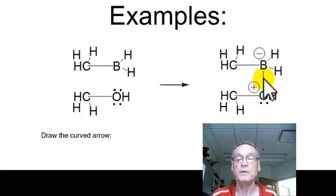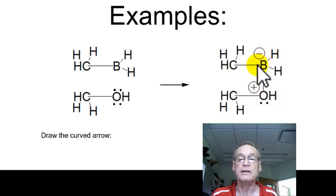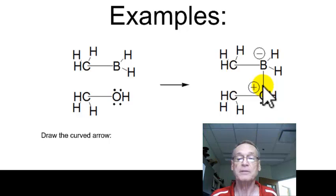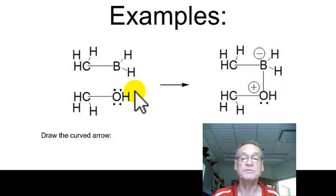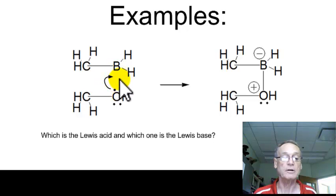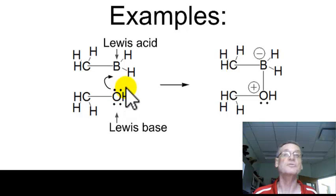Once the oxygen has donated its pair of electrons in, it has essentially given away an electron, so it becomes positive. As we've seen before, three bonds to oxygen are always positive. And the boron, when it has four bonds to it, is negative, because now it has four valence electrons instead of three. In essence, it's picked up one electron from the oxygen by sharing that pair. This pair moves in here between the oxygen and the boron. This one is the Lewis acid, and this one is the Lewis base. The Lewis acid accepts a pair of electrons; the Lewis base donates a pair of electrons.